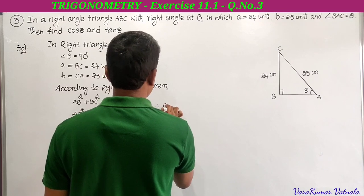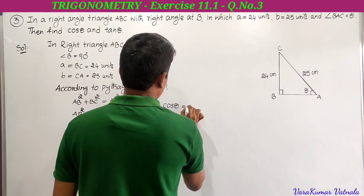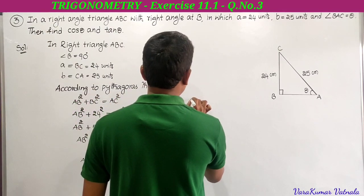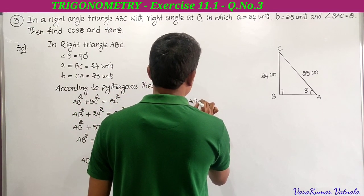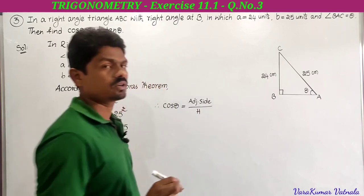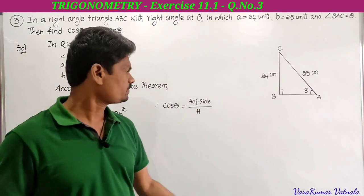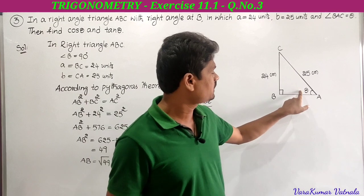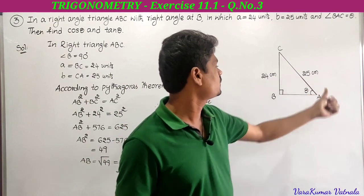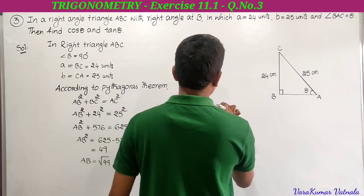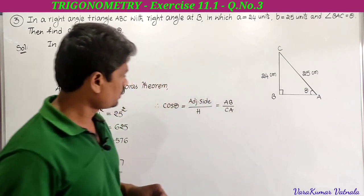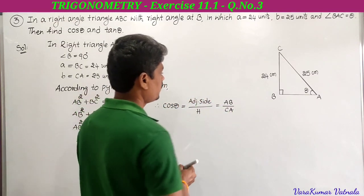He is asking to find cos theta and tan theta. Cos theta equals adjacent side to theta divided by hypotenuse. Adjacent side to theta is AB, hypotenuse is CA. So cos theta equals AB divided by CA.